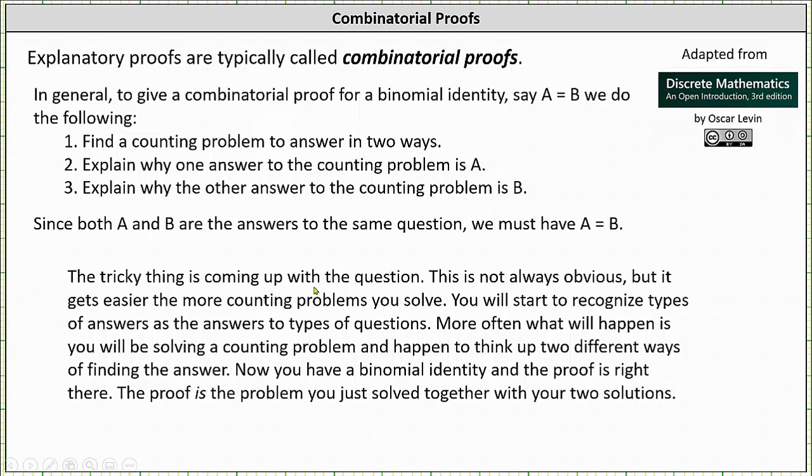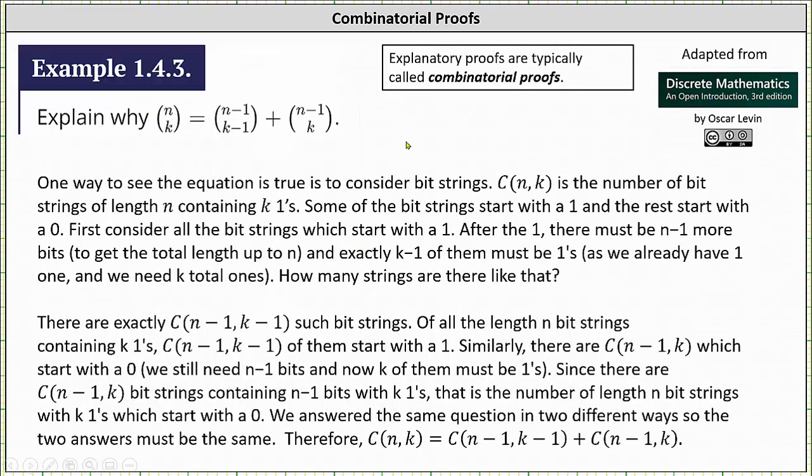The tricky part is coming up with the question. In this lesson, we'll take a look at two combinatorial proofs for the binomial identity N choose K equals N minus one choose K minus one plus N minus one choose K.